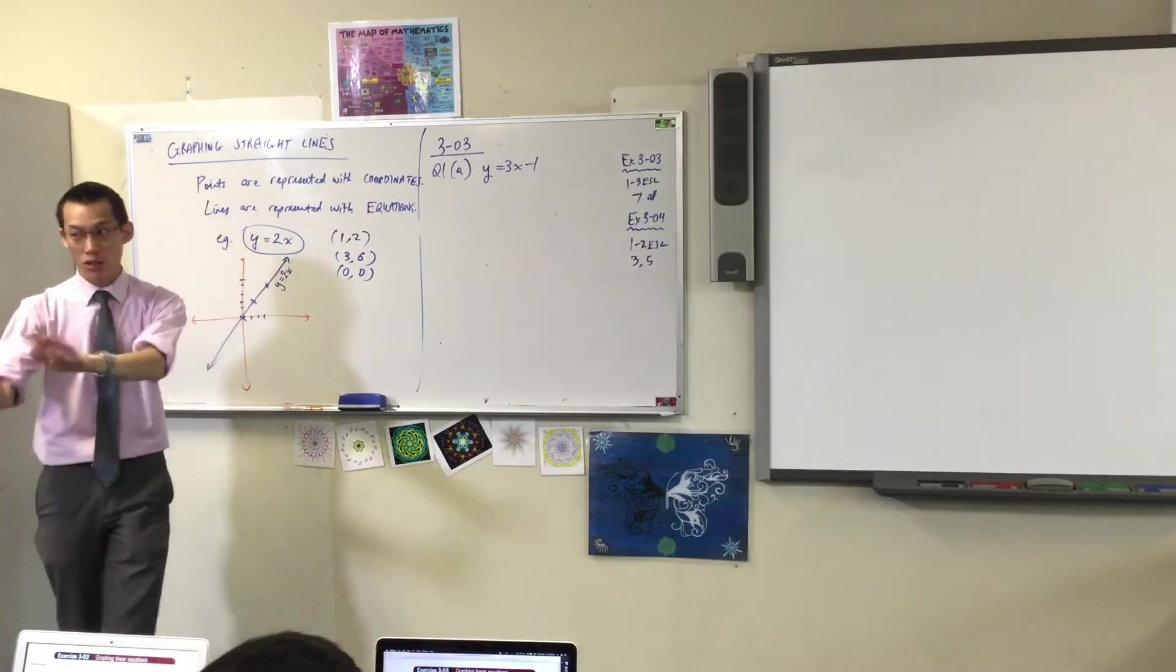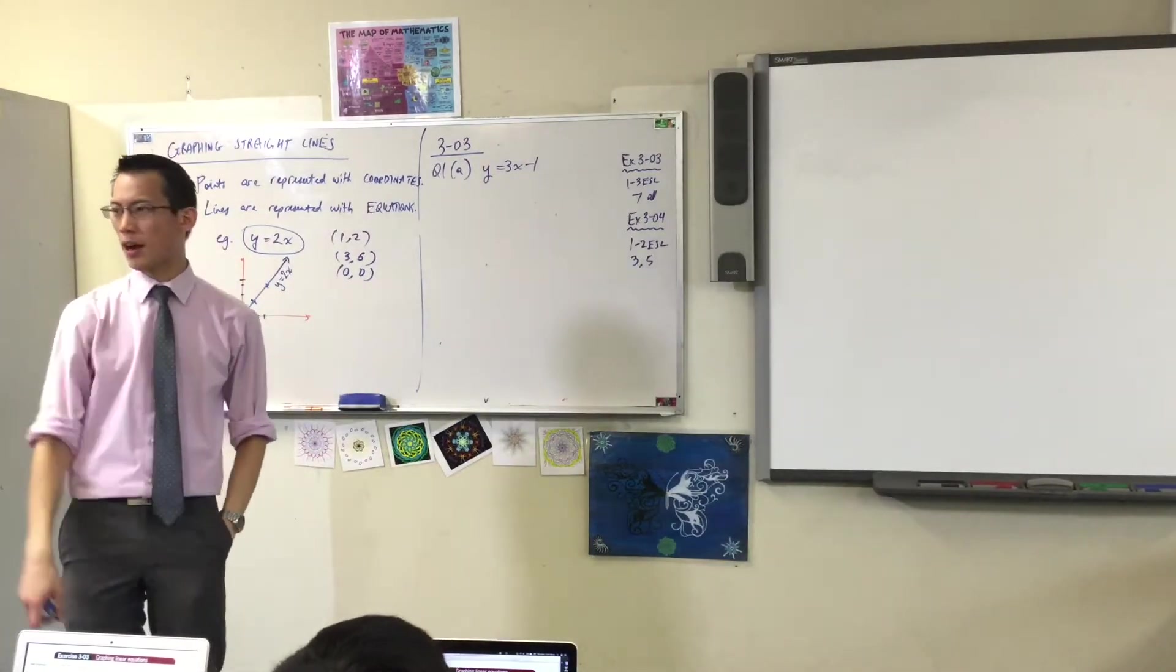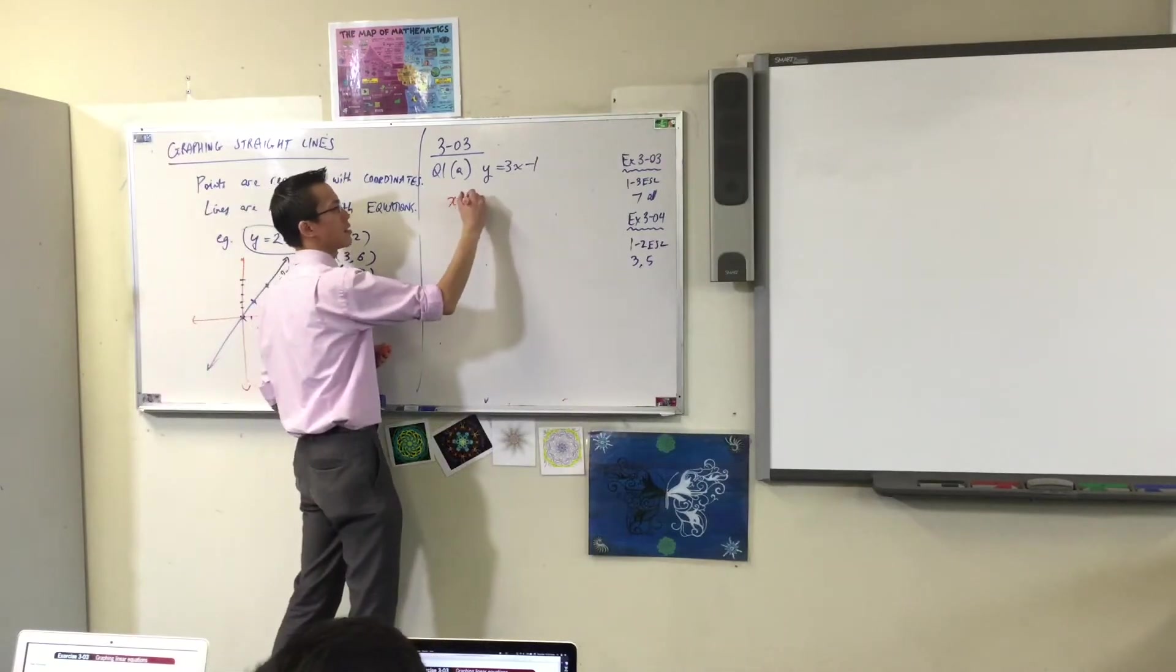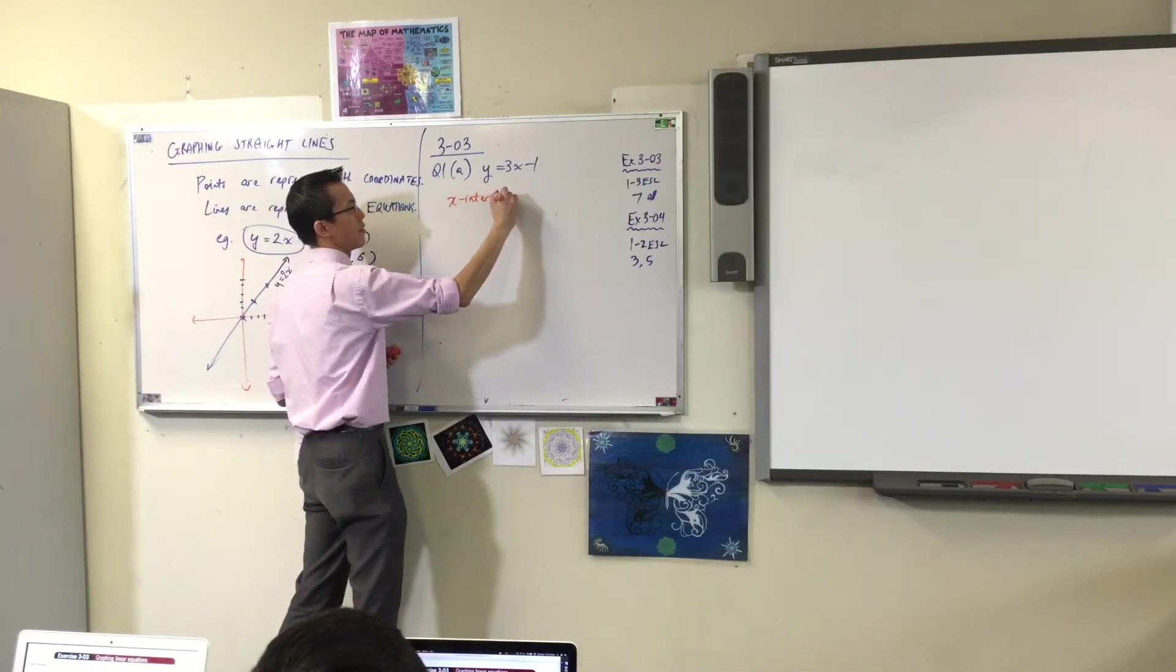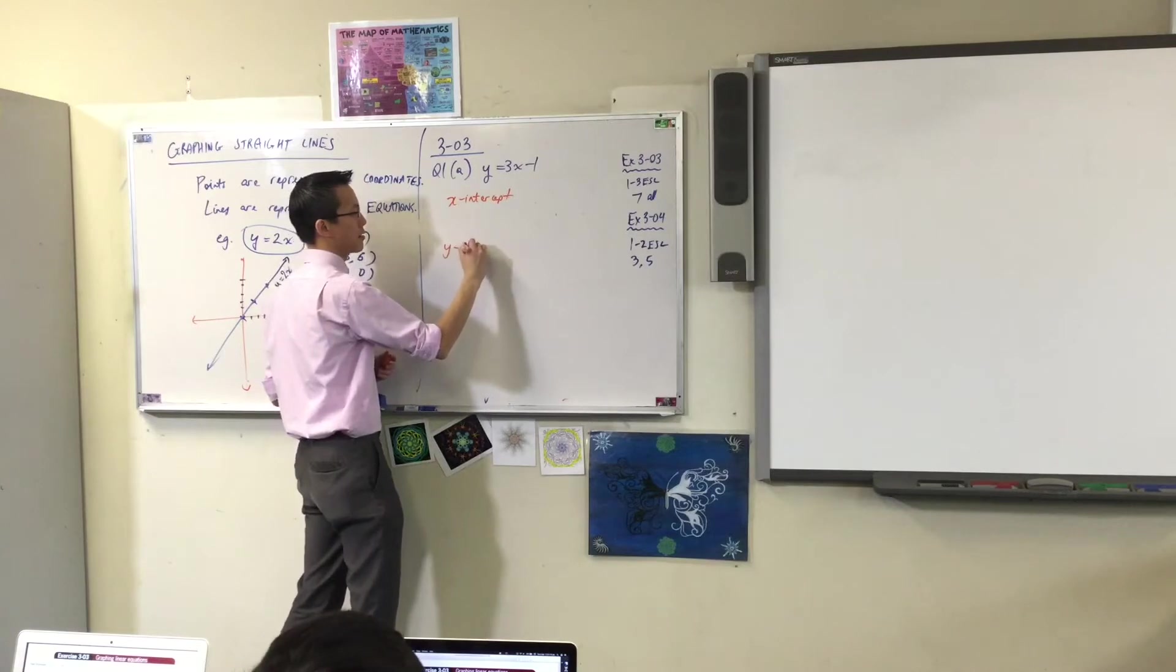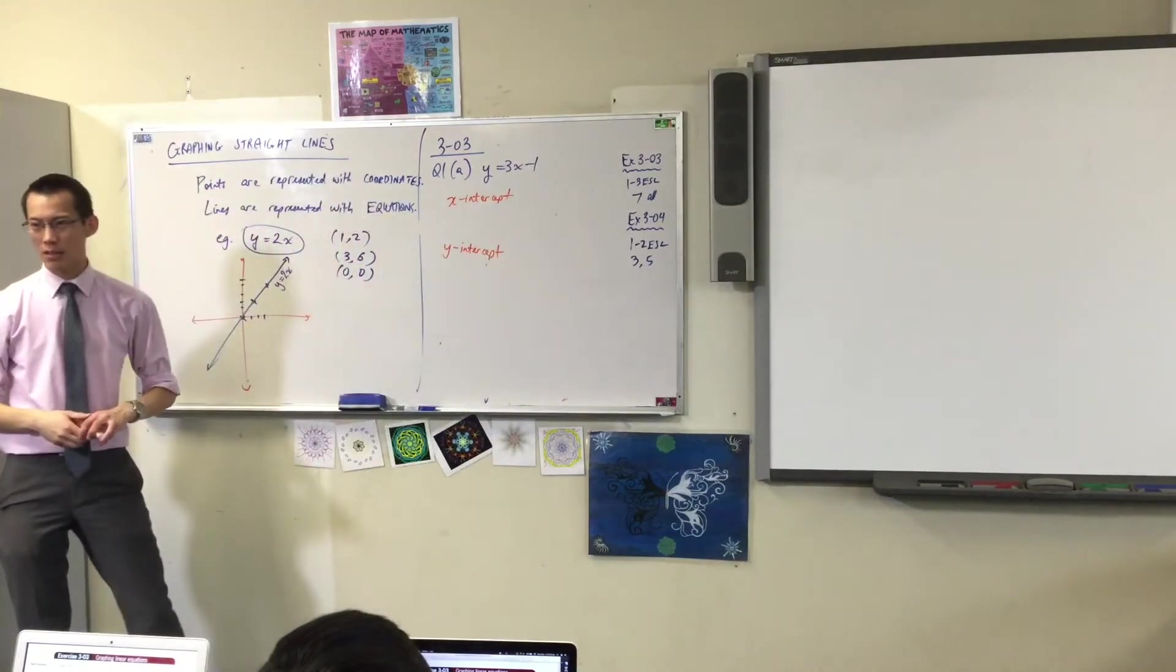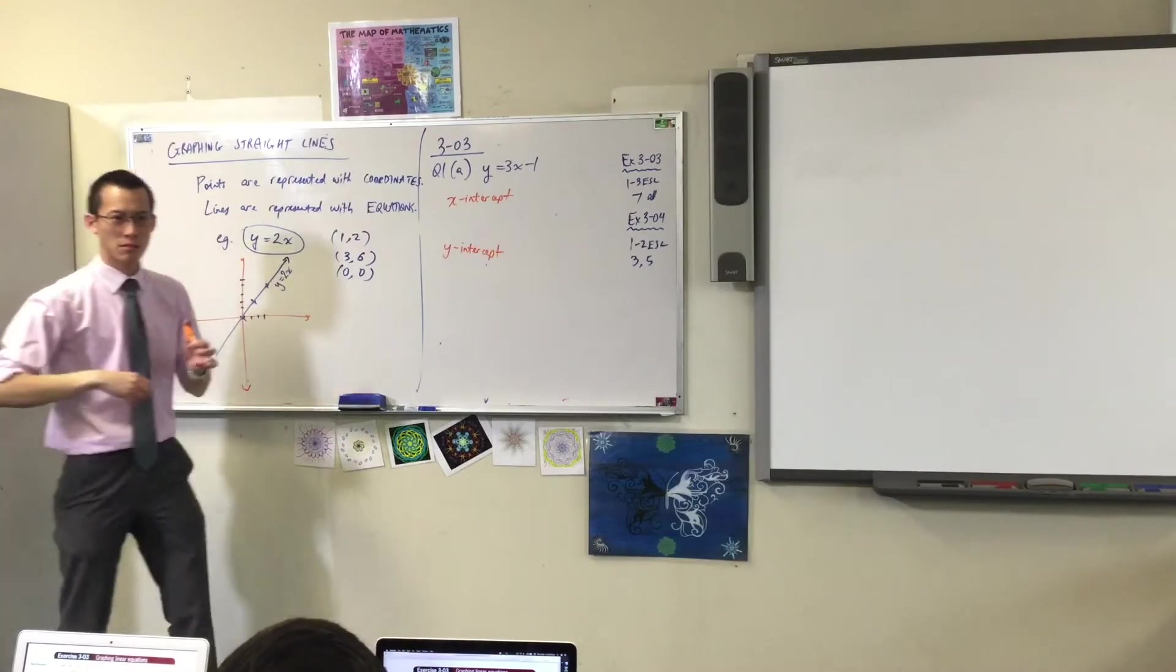You can pick any points you like, but they suggest in the exercise particular points. They suggest the x-intercept and the y-intercept. Can anyone tell me what do those mean? What does x-intercept mean?